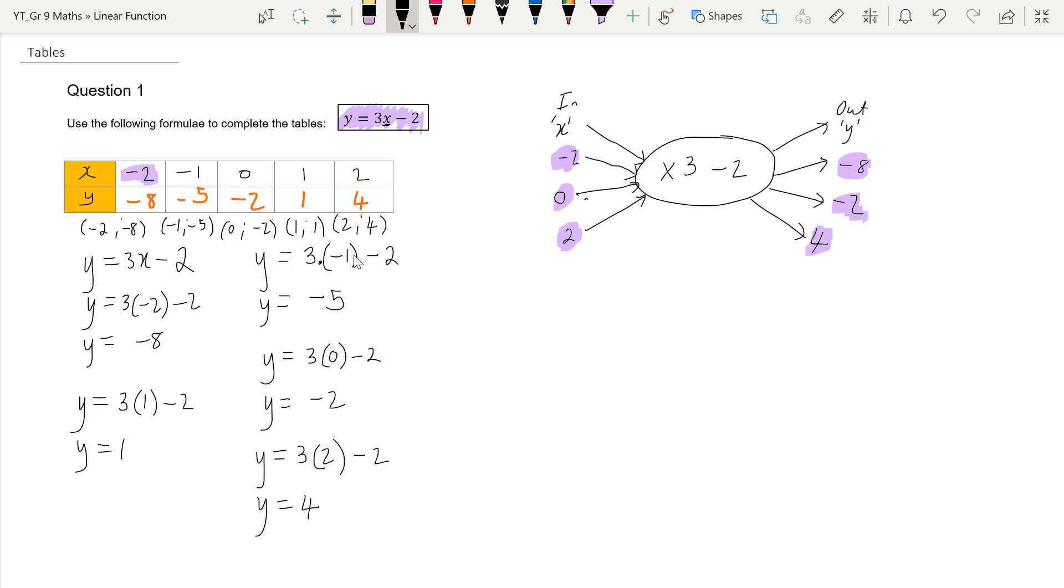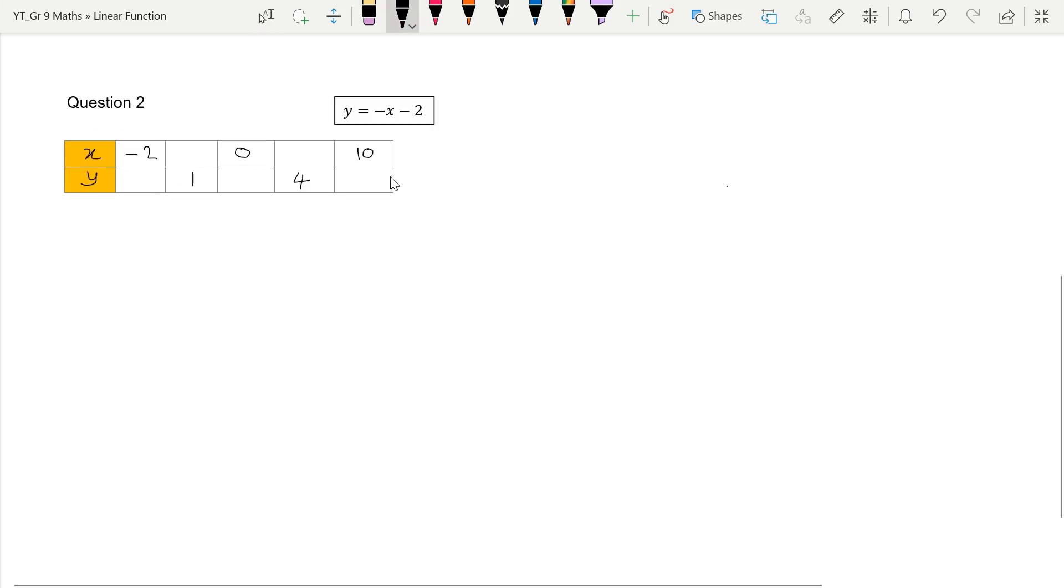We can go plot those 5 points, and I'm telling you that that will then give us a straight line. But we're going to look into that in more detail later, and then I'll show you how I knew that. Maybe you can already see how I knew that.